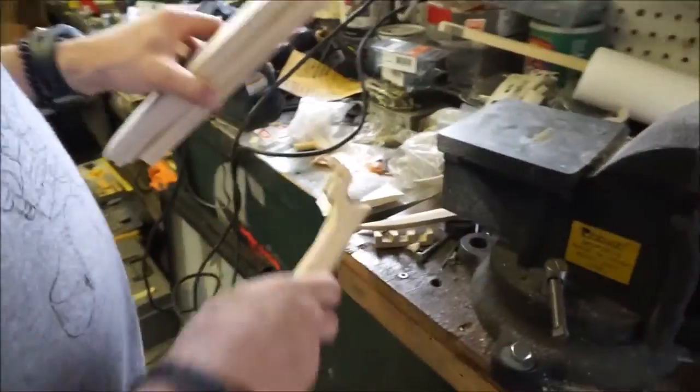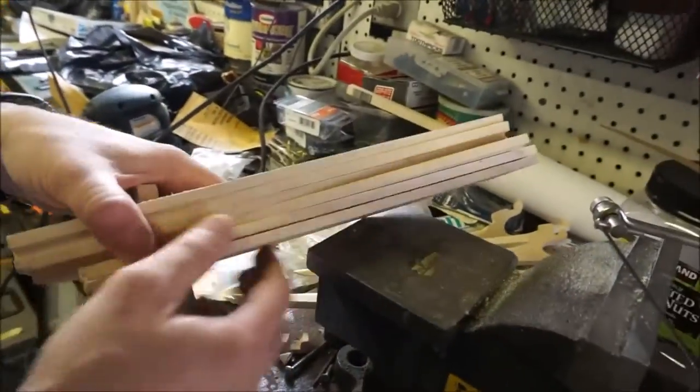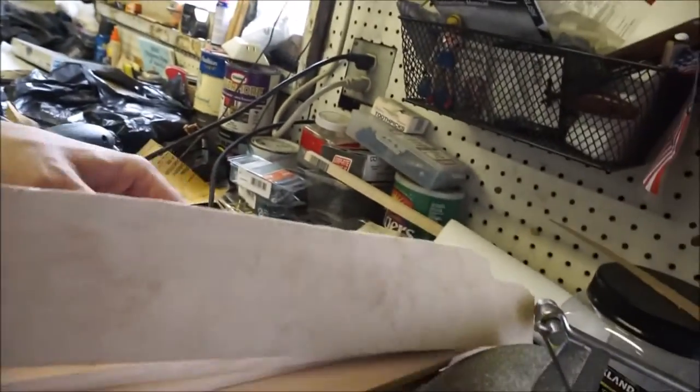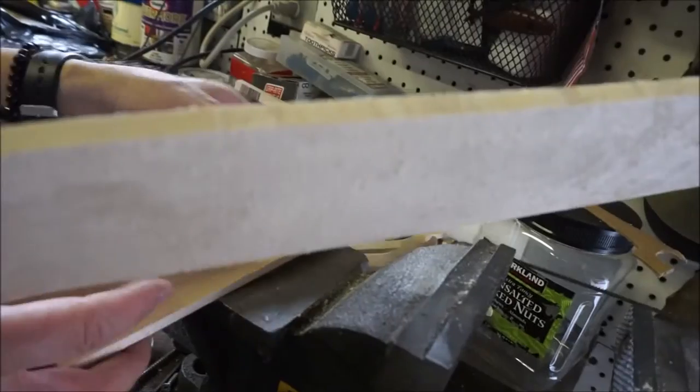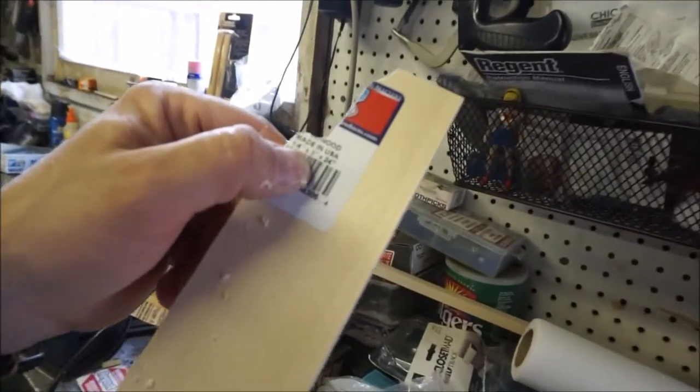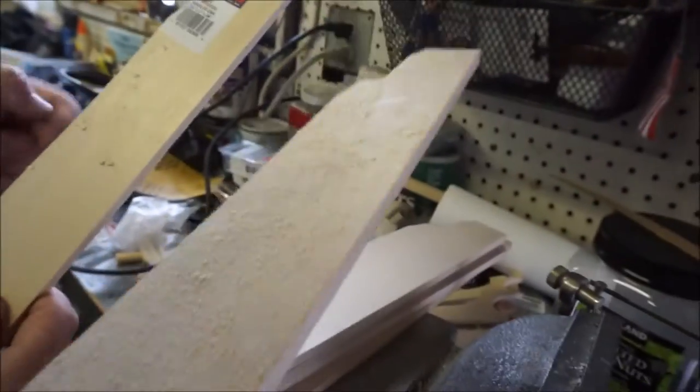So here we are checking out the Wolverine claws. It started out with quarter by three by 24 inch balsa wood.